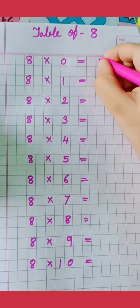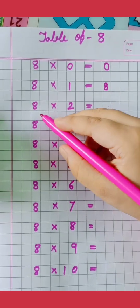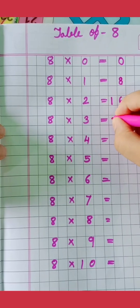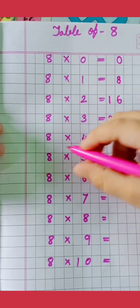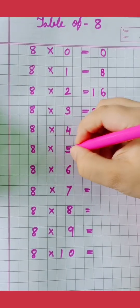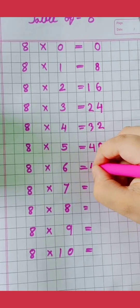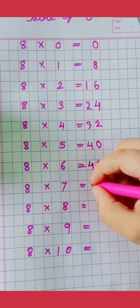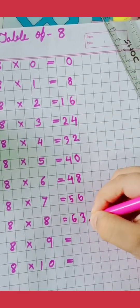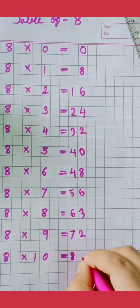Table of 8. 8 0's are 0, 8 1's are 8, 8 2's are 16, 8 3's are 24, 8 4's are 32, 8 5's are 40, 8 6's are 48, 8 7's are 56, 8 8's are 64, 8 9's are 72, 8 10's are 80.